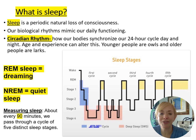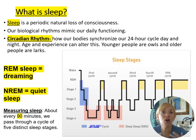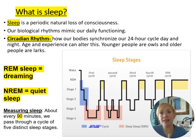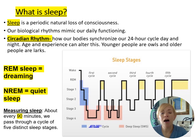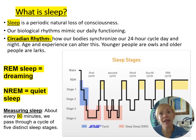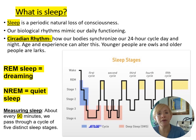Sleep is a periodic natural loss of consciousness — an altered form of consciousness that happens every night. The circadian rhythm is how our bodies synchronize our 24-hour cycle of day and night. Age and experience can alter your circadian rhythm.